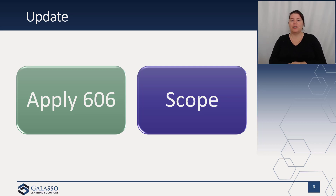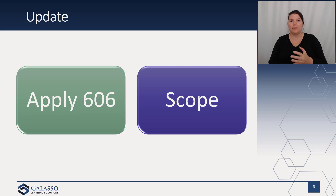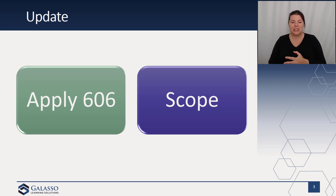The other question was scope. This addresses the accounting for contract assets and contract liabilities from revenue contracts with customers, and can also apply to contract assets and contract liabilities from other areas like Topic 610-20, other gains and losses from de-recognition of non-financial assets. However, it does not apply to other assets or liabilities that come out of revenue contracts with customers. So if it's a contract asset or contract liability as defined in Topic 606, it's in scope — even if it's not a 606 item like Topic 610. However, if it's in 606 but it's not a contract asset or contract liability — for example, refund liabilities, customer-related intangible assets, or contract-based intangible assets — those are not in scope of the standard.